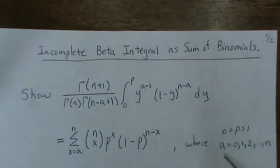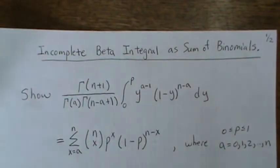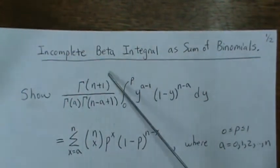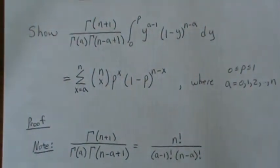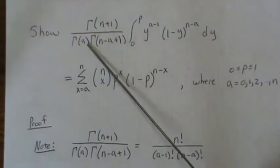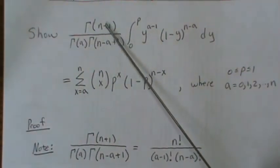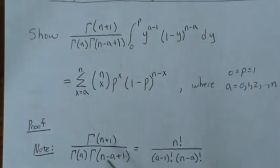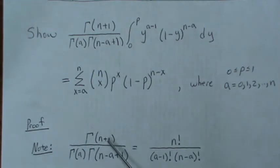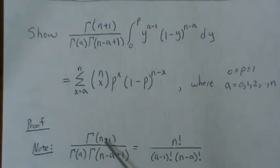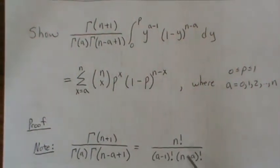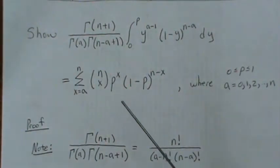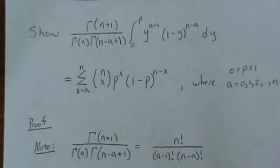Here A takes on integer values and P is a number between 0 and 1. Because A is an integer and N is an integer, these can be written as factorials. The gamma function of an integer is the factorial just minus 1. So this is N factorial, this one is A minus 1 factorial, and this is N minus A factorial. We're going to use this notation as we move forward.